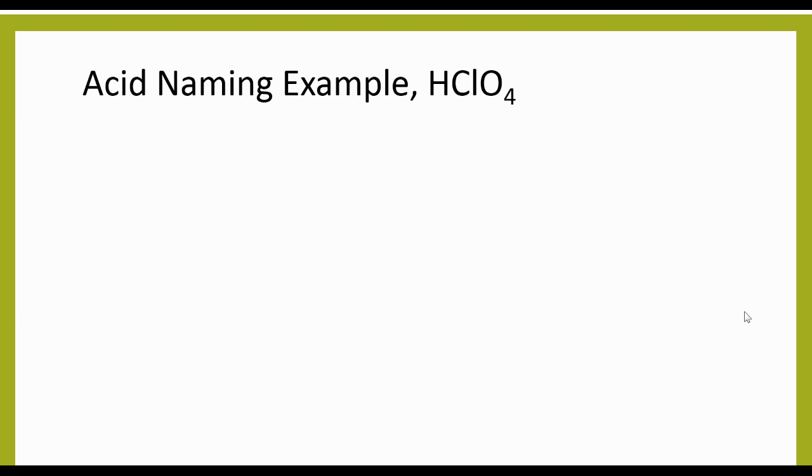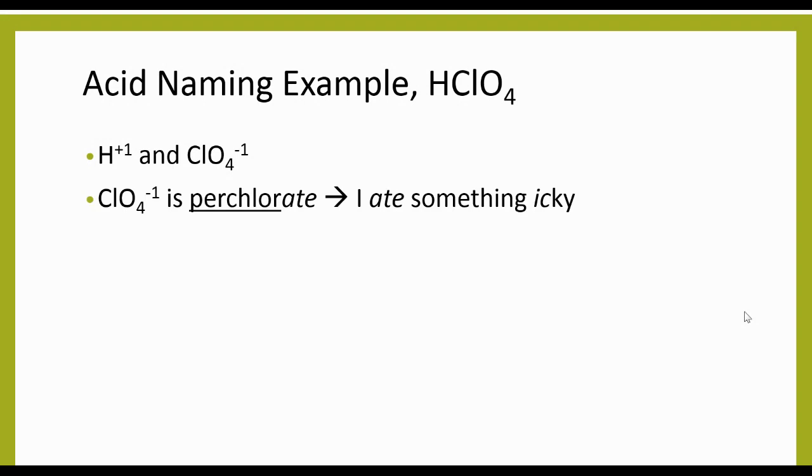Let's go ahead and try some examples with these. This first one, HClO4. Let's go ahead and split it into its ions. The first one we're gonna have is hydrogen, and then ClO4 minus one, which, if you think back a little ways, that is going to be the perchlorate ion. I will post a list of all the polyatomic ions online for you guys to review. Perchlorate, so if I think about this -ate, 'I ate something icky,' so I'm gonna take this stem, which is going to be that perchlor, and then add the -ic to it.